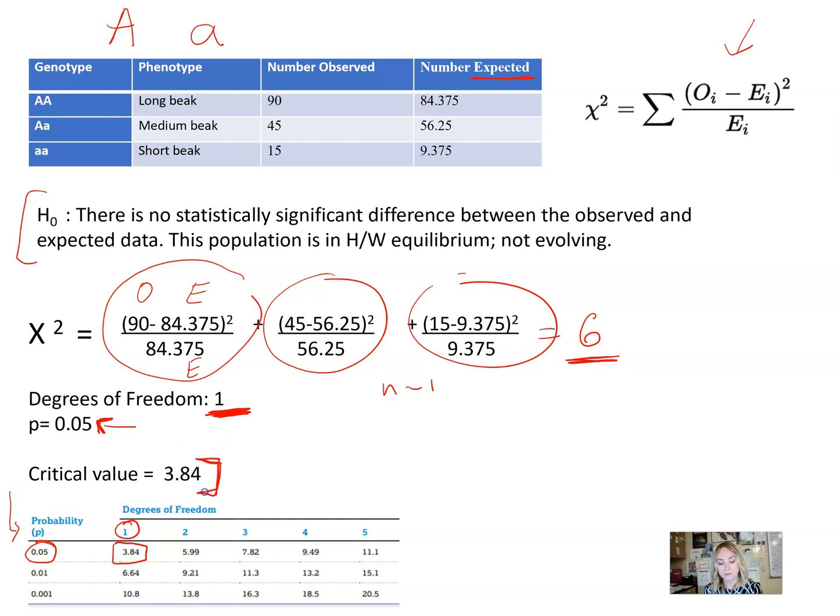As you already know, since the chi-square value is greater than the critical value, what do we say? We reject the null hypothesis. It means the population is not in Hardy-Weinberg equilibrium. The differences that we see between observed and expected data are statistically significant, so it means the population is evolving. Hope that helps! I'll see you in the next set of notes.